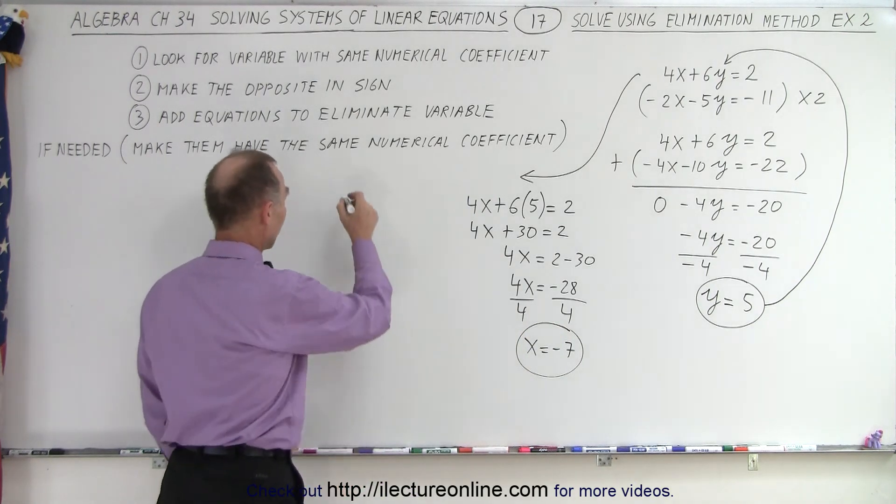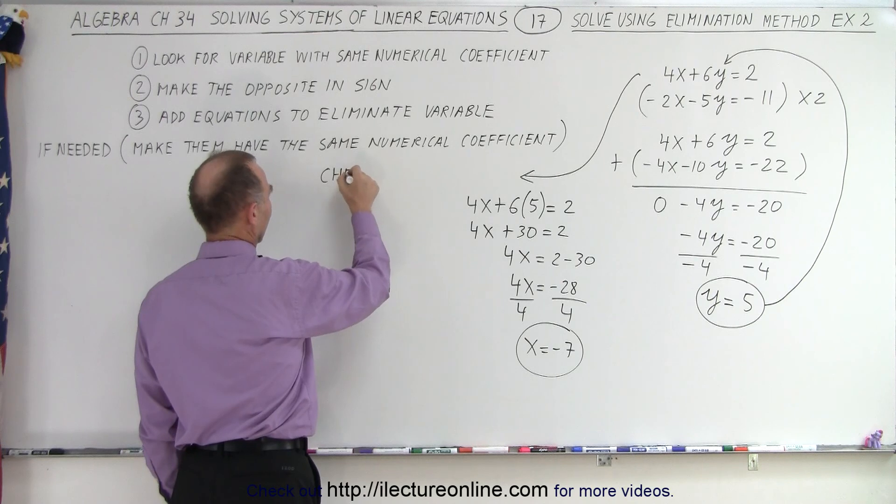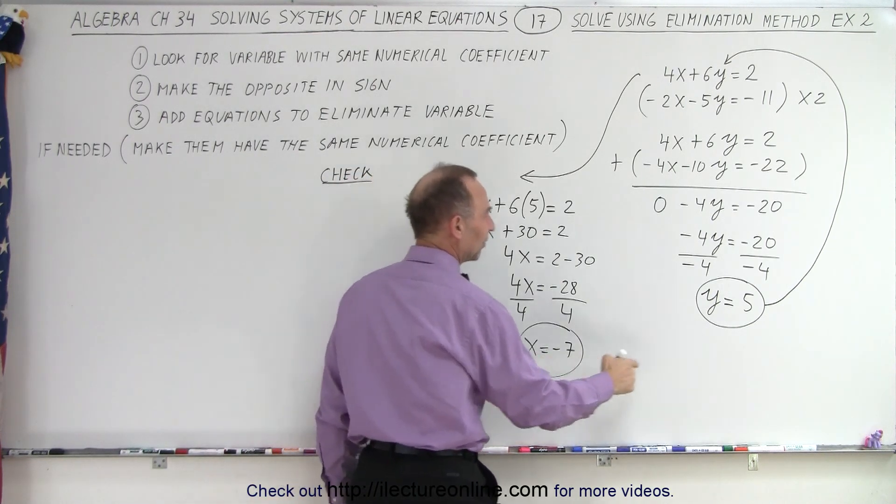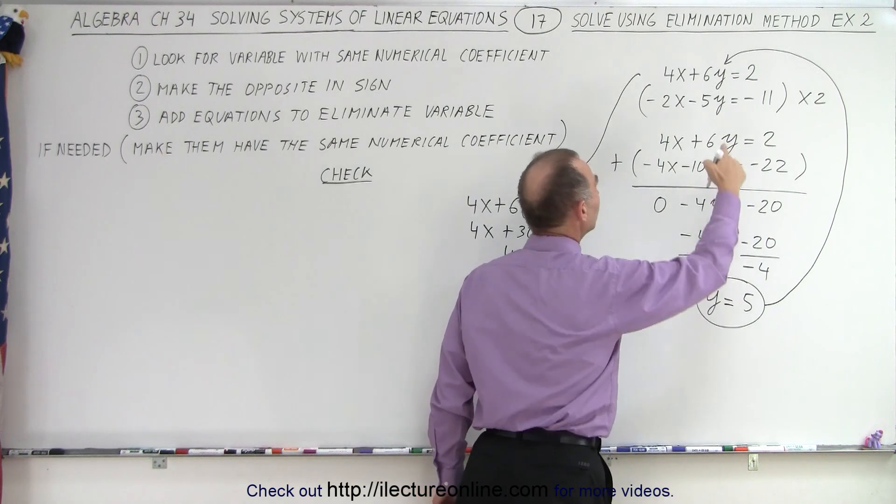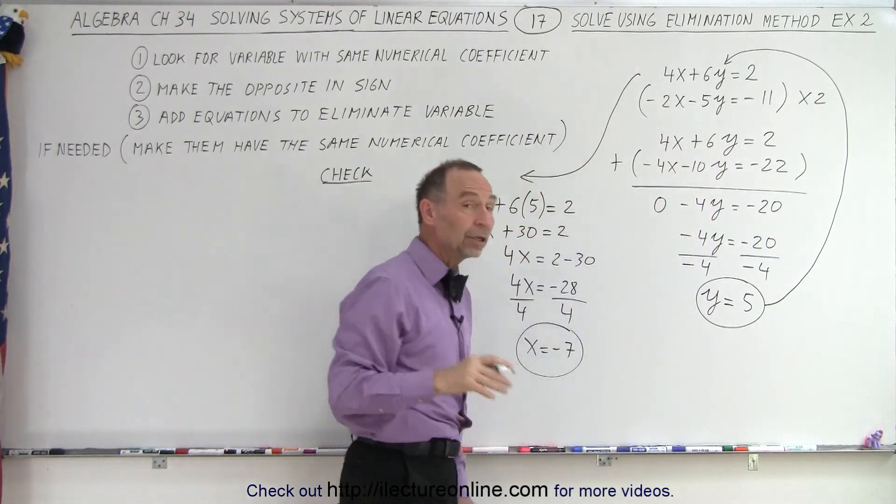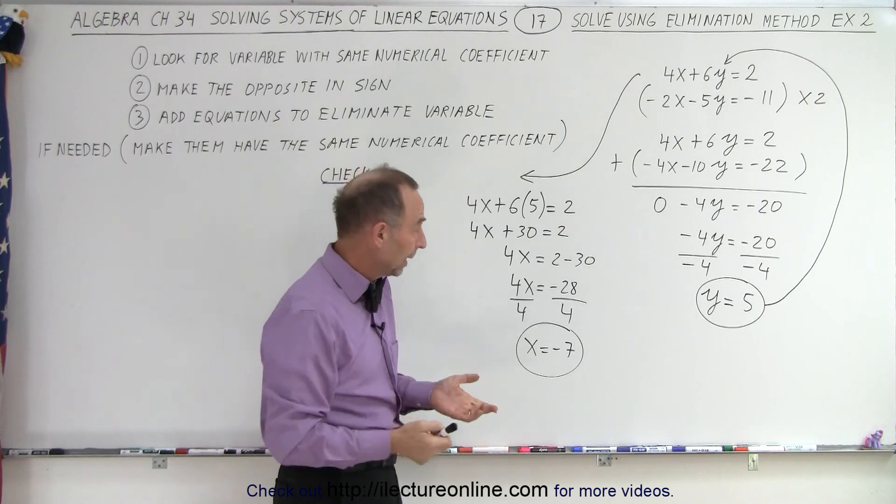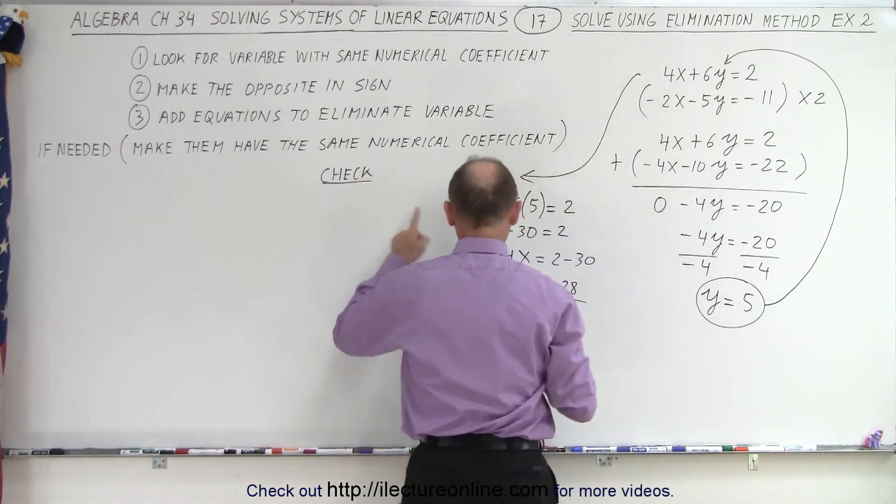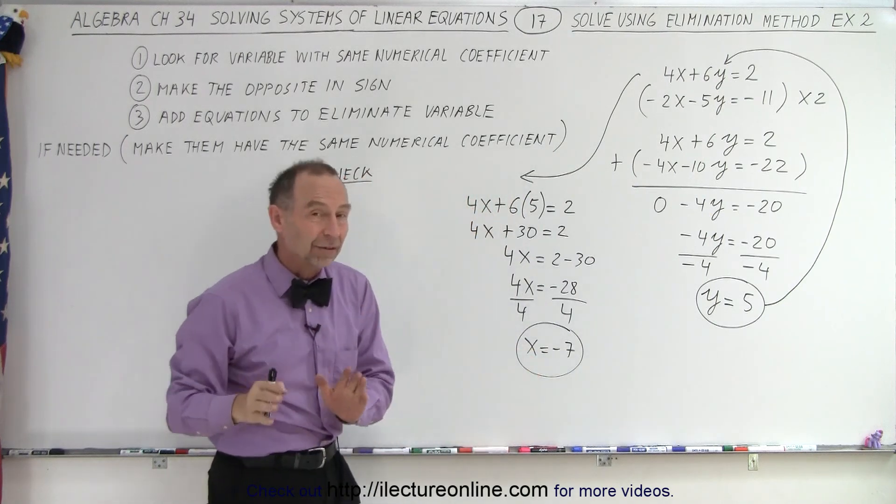So Y equals 5, X equals negative 7 appears to be the solution. But just to make sure, I'm going to do a check. What I'm going to do is I'm going to plug in X equals negative 7 and Y equals 5 into the other equation. Why the other equation?